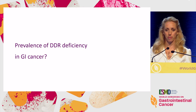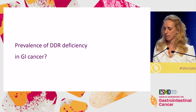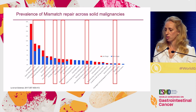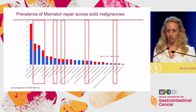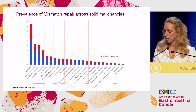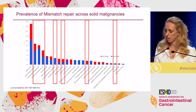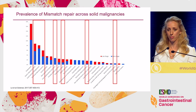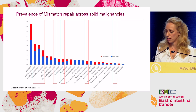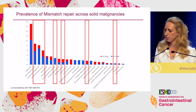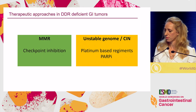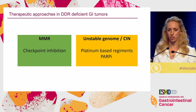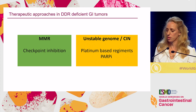What about the prevalence of DDR deficiency in GI cancer? Starting with mismatch repair, one can see in this pivotal study — in red blocks — the prevalence of mismatch repair deficiency across solid malignancies. Gastric and small intestinal colorectal cancers are more prevalent, with much less prevalence as we go further down the GI tract.